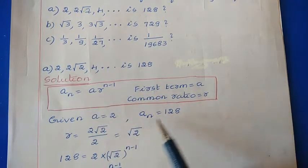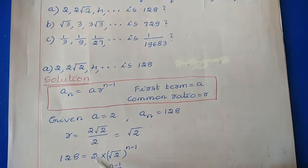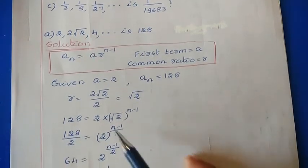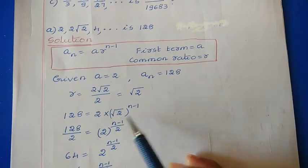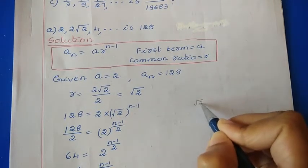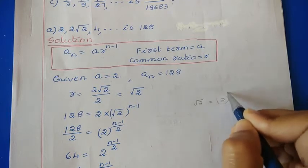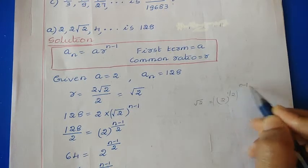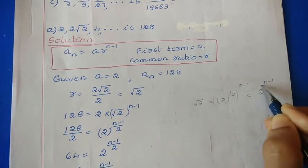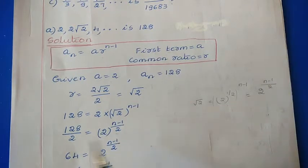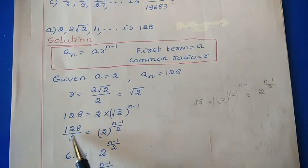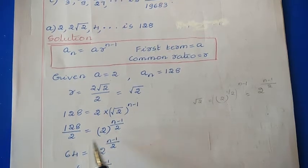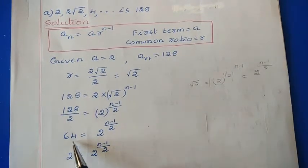Substituting: 128 = 2 · (√2)^(n-1). We can write √2 as 2^(1/2), so this becomes 128 = 2 · 2^((n-1)/2). Taking 2 to the other side: 128/2 = 2^((n-1)/2), which gives 64 = 2^((n-1)/2).